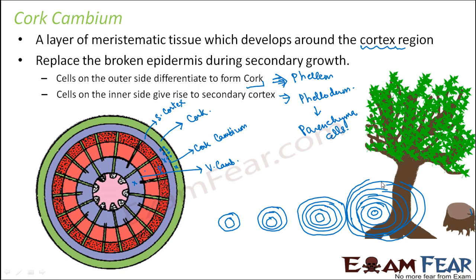Secondary growth is observed not only in stems but also in roots. In roots we similarly have a vascular cambium and a cork cambium, and the concept remains the same. It is just that the structure of the root is a little different. When you compare a dicot stem and a dicot root, their structure is a little different because the pattern of the vascular bundles differs — in roots it is radial, in stems it is conjoint. Otherwise the concept of secondary growth remains the same.